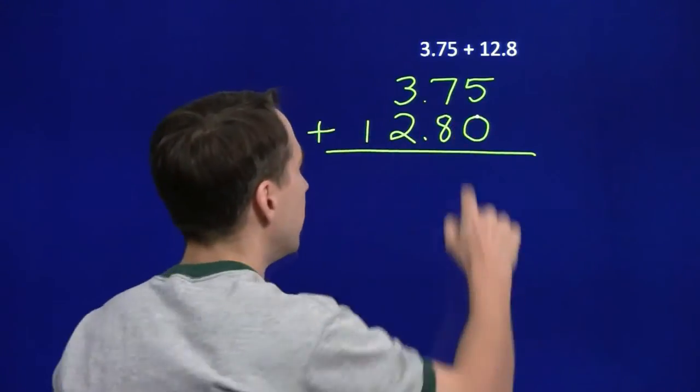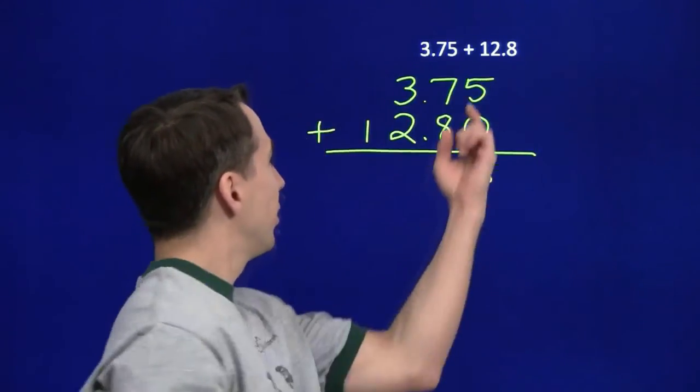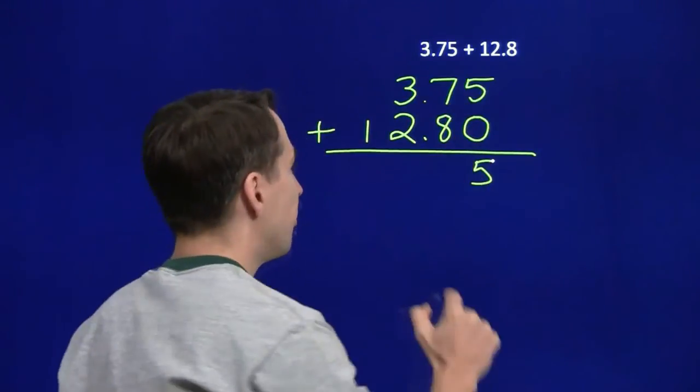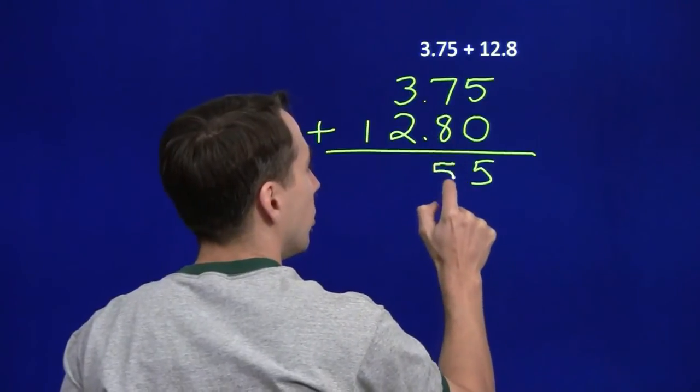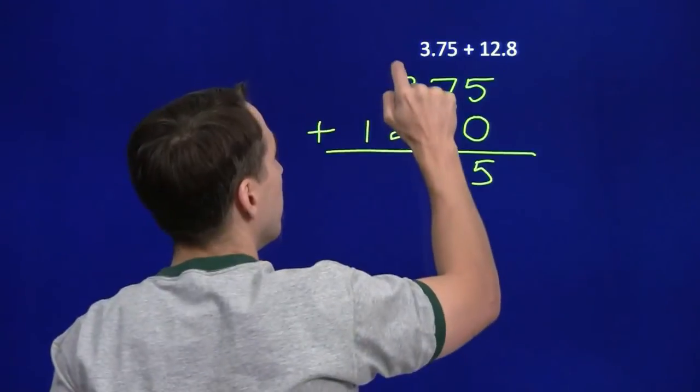There's an imaginary 0 out there. It's not so imaginary now. We add the 5 and the 0. We get 5. 7 tenths and 8 tenths is 15 tenths. We bring the 5 down. We regroup the other 10. The other 10 tenths makes a 1.